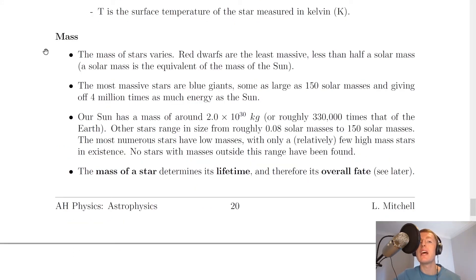The next property is mass, and it says here that the mass of stars varies. Red dwarfs are the least massive, less than half a solar mass, whereas solar mass is the equivalent of the mass of the sun. The most massive stars are blue giants, some as large as 150 solar masses, and giving off 4 million times as much energy as the sun. Our sun has a mass of around 2.0 times 10 to the 30 kilograms, or roughly 330,000 times that of the earth, and you'll get this value on the data sheet in the exam.